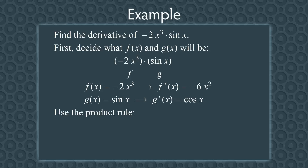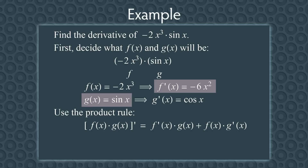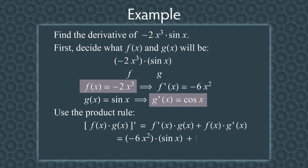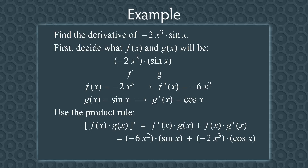Let's now use the product rule. It says that the derivative of fg equals f′g plus fg′. Plugging everything in: the first term f′g gives −6x² times sin(x), and the second term fg′ gives −2x³ times cos(x). Multiplying everything out and getting rid of the parentheses, we get −6x² sin(x) − 2x³ cos(x). There are no like terms, so we can't simplify this any further.